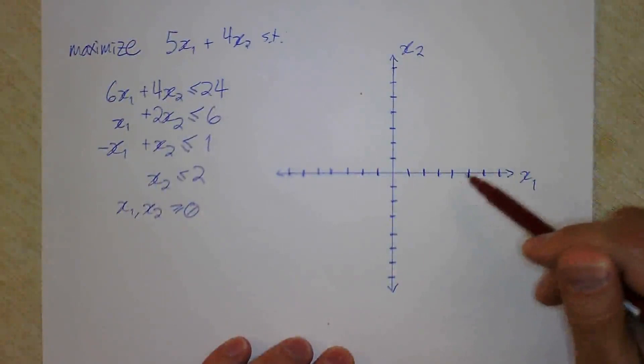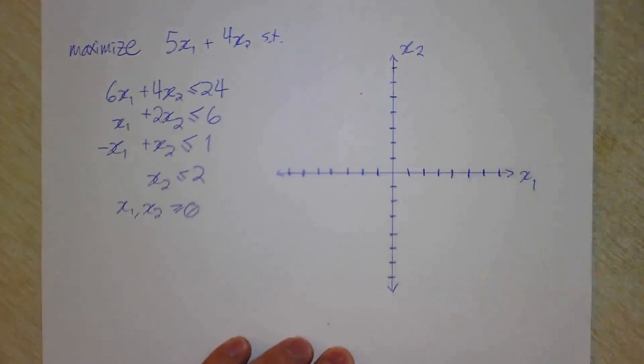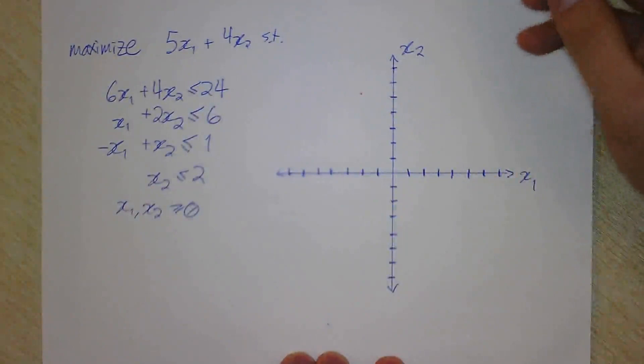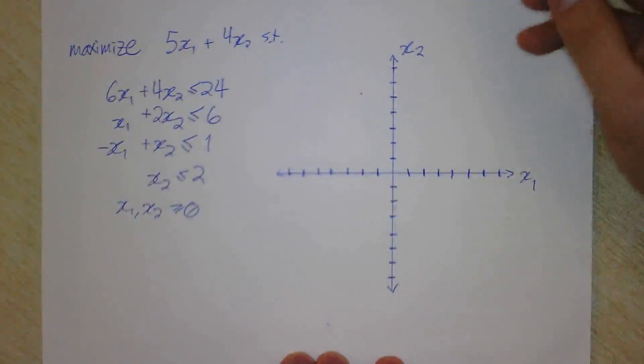The reason it only works with two variables is because we can draw things in two dimensions. If we could draw things in three dimensions, there would be a three-dimensional graphical method as well. Ordinarily you're going to want to do this with graphing paper and a ruler, and I do not have either of those, so I'm going to freehand it, but hopefully this is enough to convey the idea.